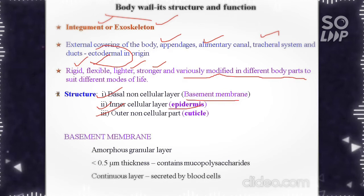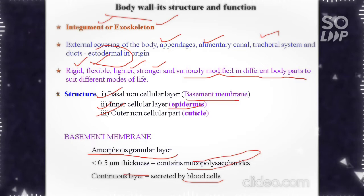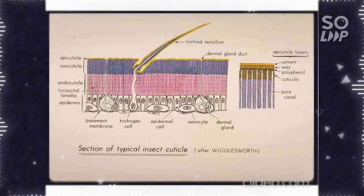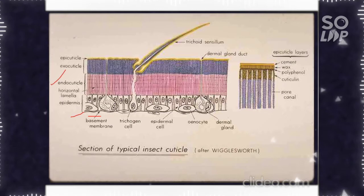The basement membrane is an amorphous granular layer secreted by the blood cells. It is 0.5 micron thickness and contains mucopolysaccharides. This is the section of insect cuticle. Here you can see the basement membrane at the base, and then the endocuticle, exocuticle and the epicuticle.